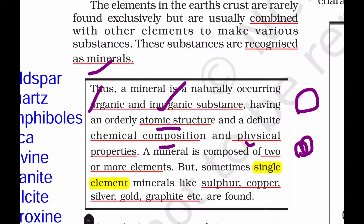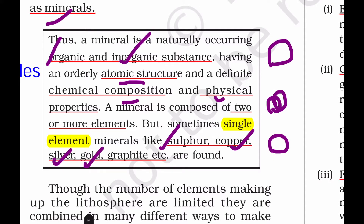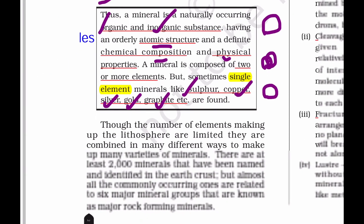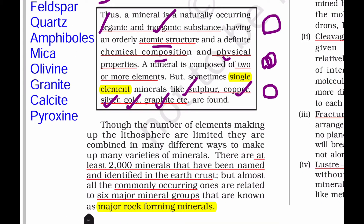A mineral can be a single element. For example, sulfur, copper, silver, gold, and graphite are all single-element minerals. Minerals are defined by their composition, atomic arrangement, and physical properties.